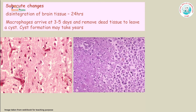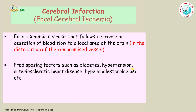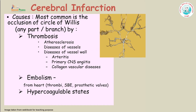In subacute changes, disintegration of brain tissue occurs within 24 hours, followed over a few days by macrophage proliferation and then gliosis. Focal ischemic necrosis follows decrease or cessation of blood flow to a local area of the brain in the distribution of the affected vessel. The most affected patients are those who are diabetic, hypertensive, have arteriosclerosis, heart disease, or hypercholesterolemia.